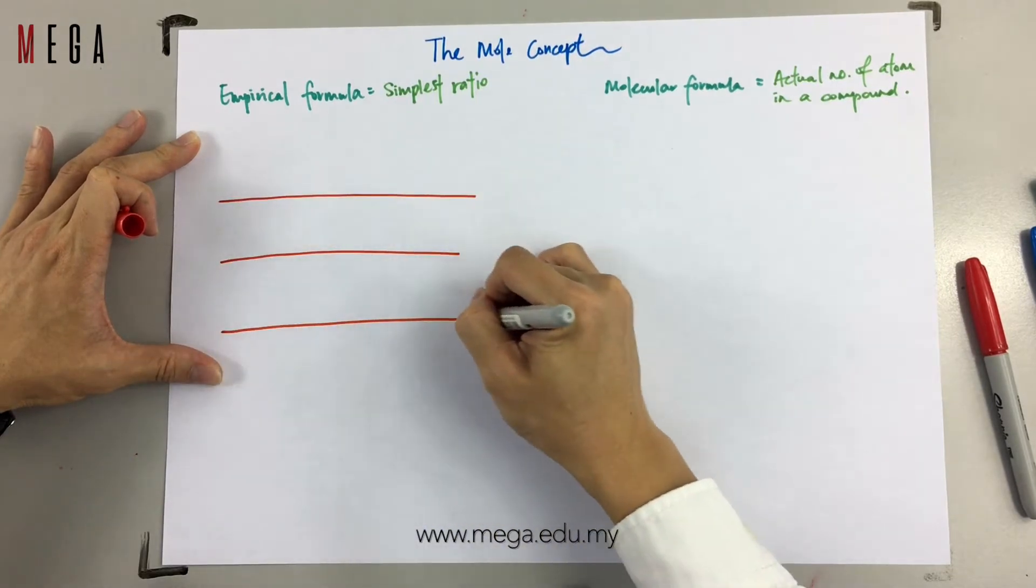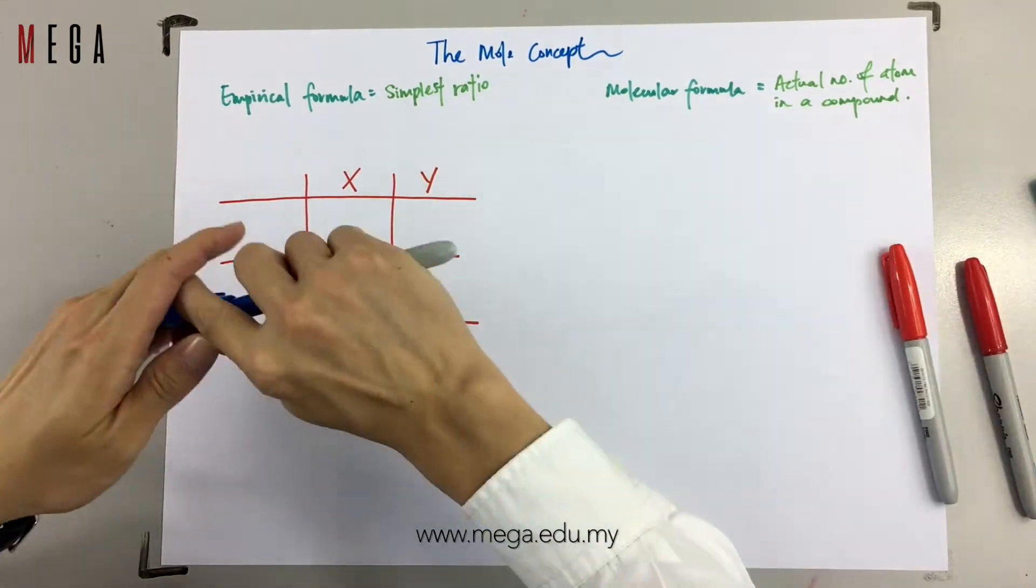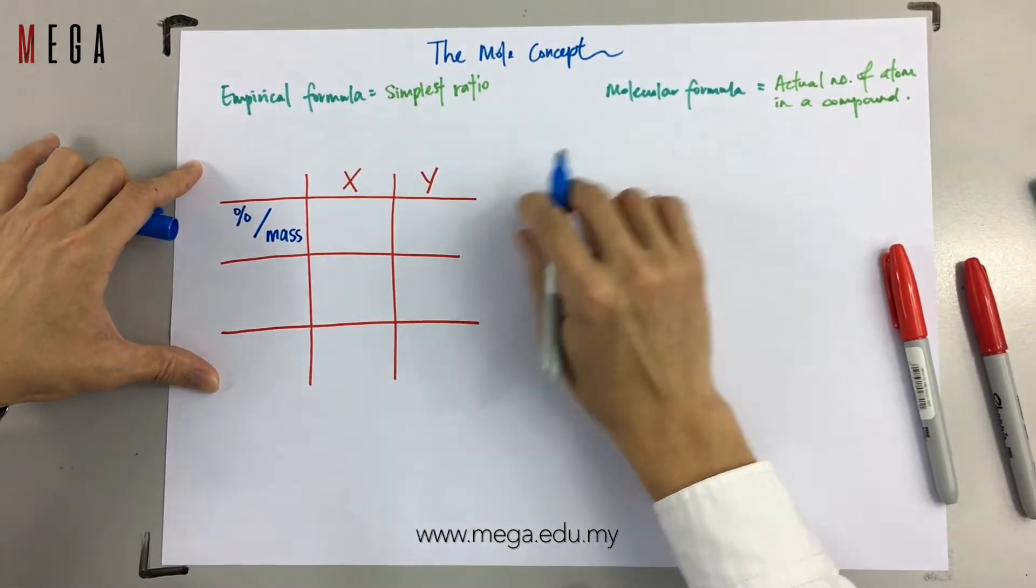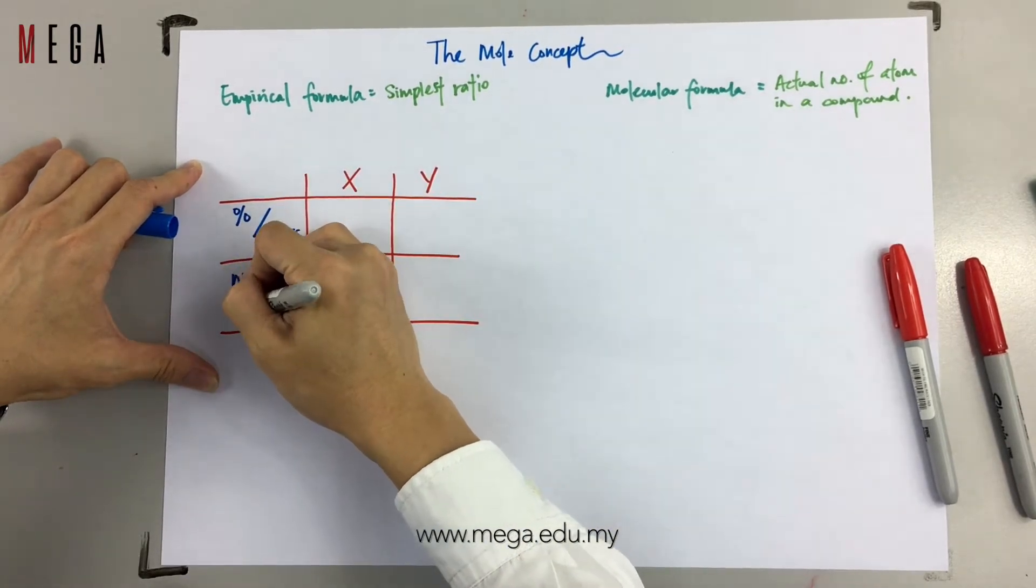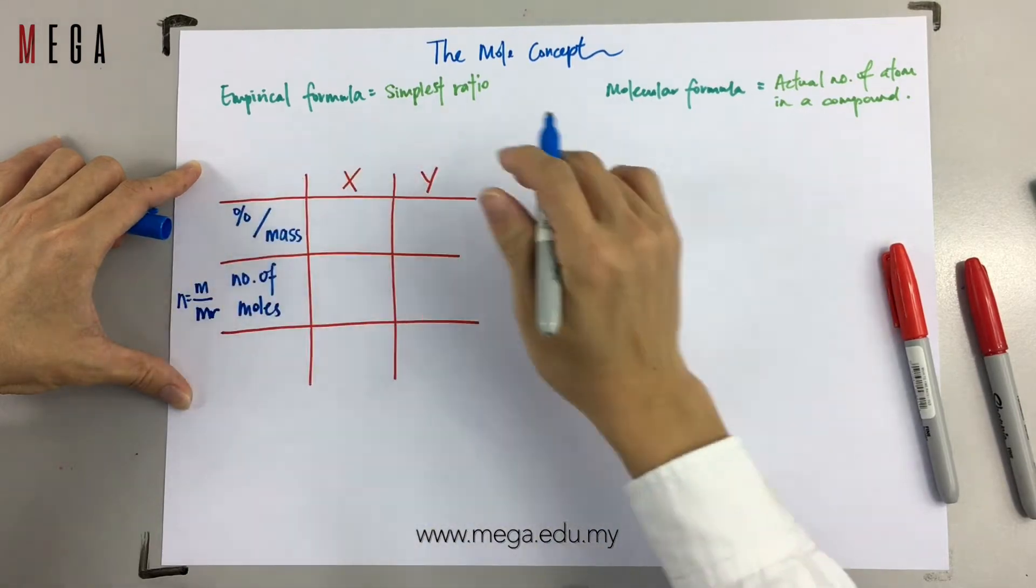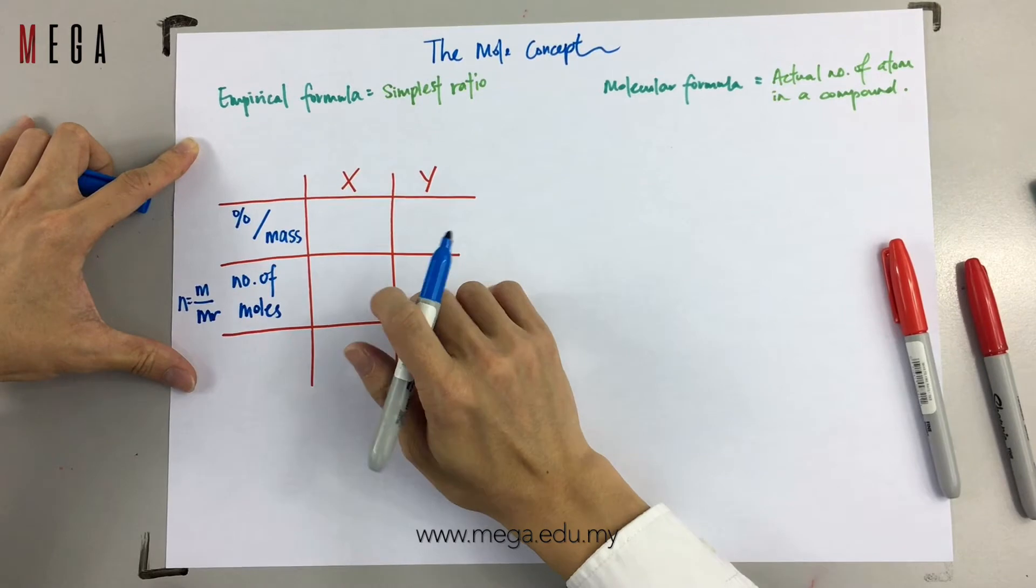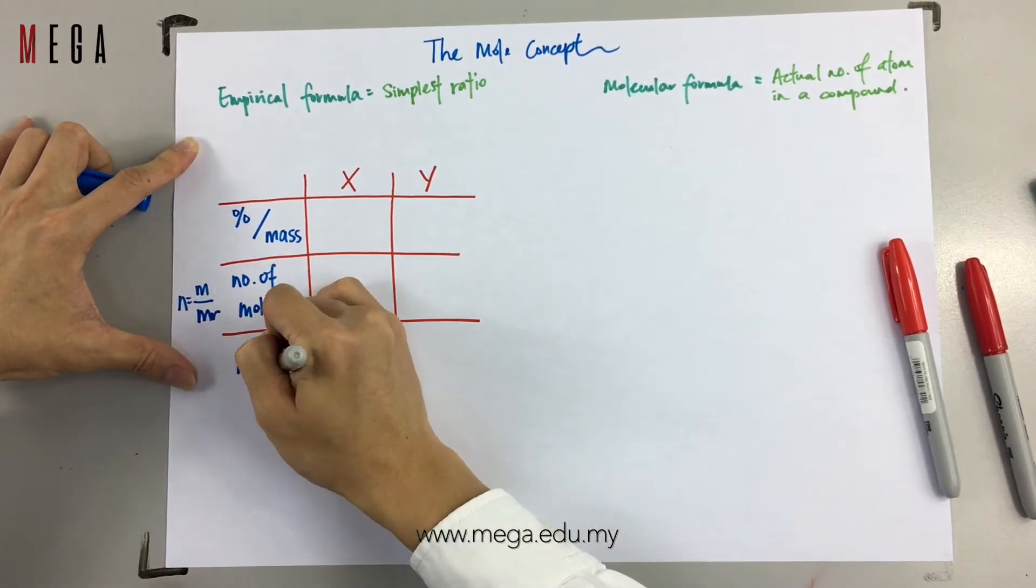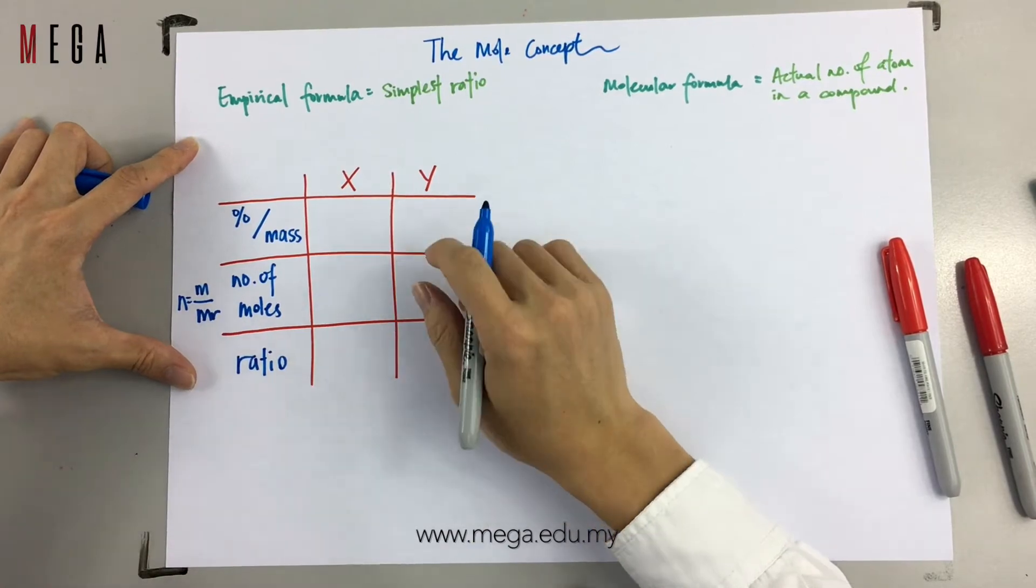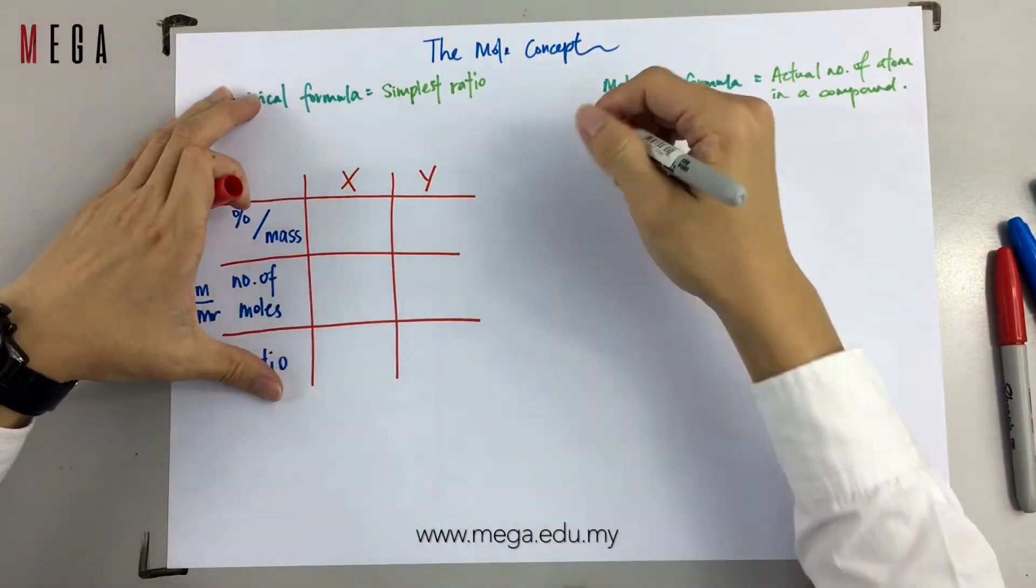In order to find the empirical formula, there are three simple steps. First, look for the percentage or the mass given. Then, find the number of moles. The formula for number of moles is N equals to M over Mr. Lastly, look for the ratios from the number of moles that you obtained. Both number of moles divided by the smallest number of moles.